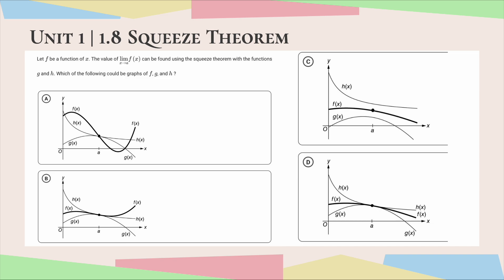The question states: let f be a function of x. The value of the limit of f(x) as x approaches a can be found using the squeeze theorem with the functions g and h. Which of the following could be the graphs of f, g, and h? Basically, we are looking for our f(x) function to be squeezed in between g and h. Let's go through one by one and see which one the squeeze theorem would apply to.